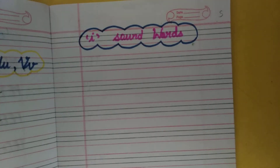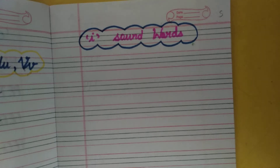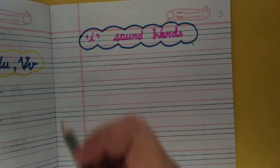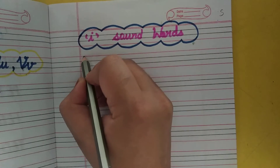Okay students, now we will do the I sound words. I sound — words in which the 'i' sound appears. For example: H, I, T — hit. So let's start.